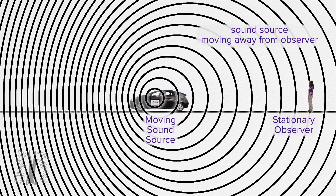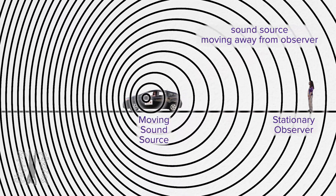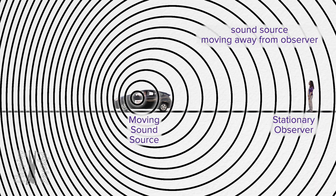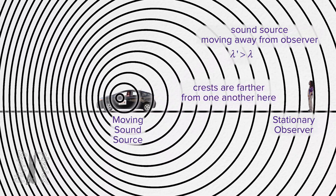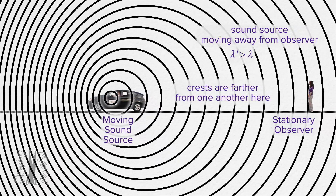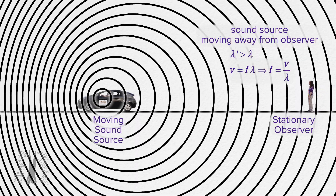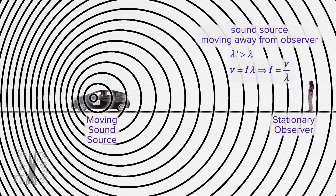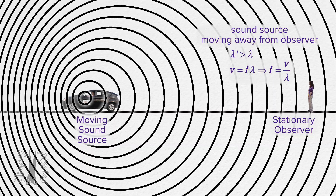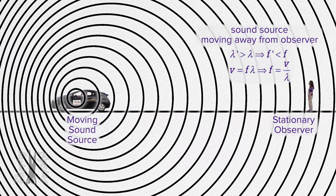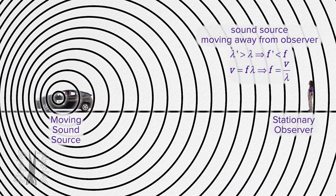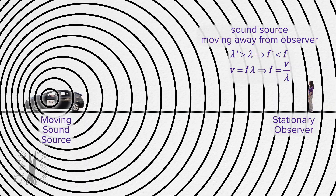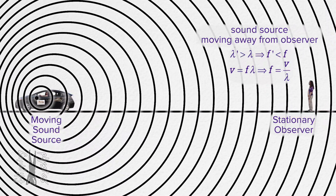What happens when the car is moving away from the observer? This should be the inverse of what we just discussed. The crests are farther away from one another, so the wavelength of the observed wave is larger. Since wavelength and frequency are inversely related, because the observed wavelength is increased, the observed frequency is decreased. That is why the frequency and pitch of the observed sound are lower when the car is moving away. The frequency and wavelength of the sound source itself remain unchanged.